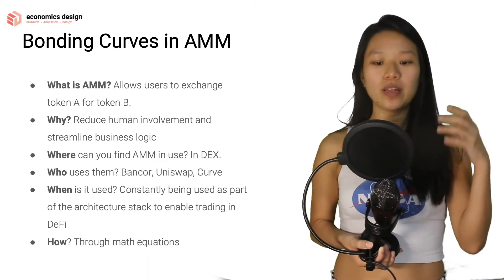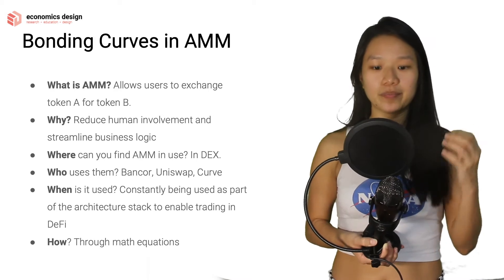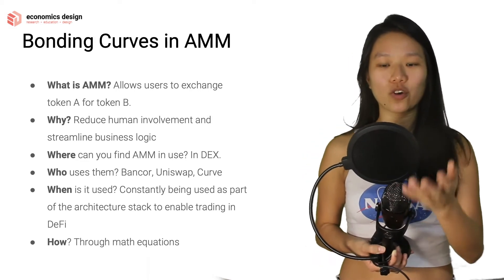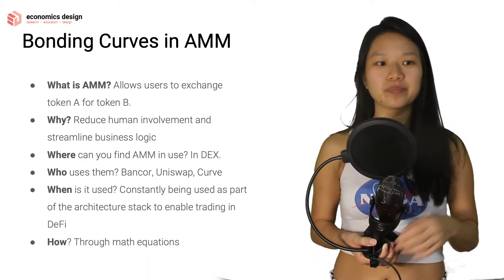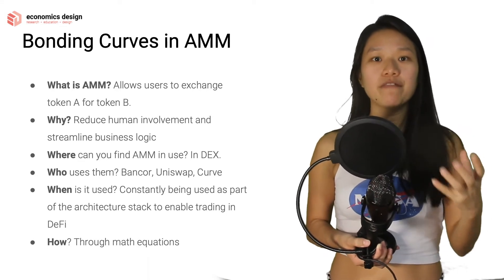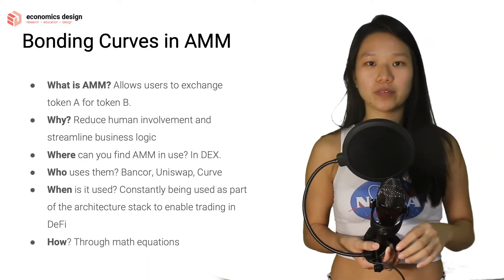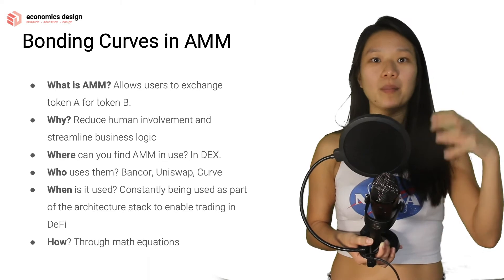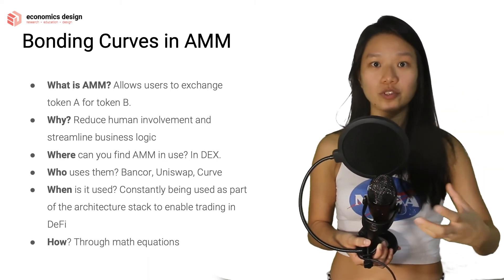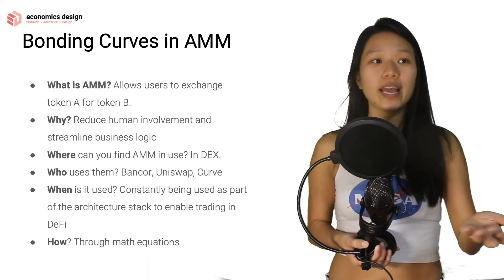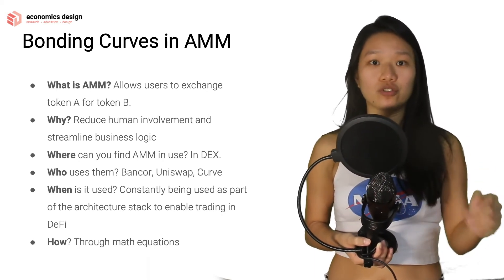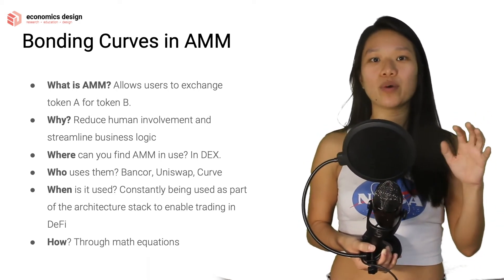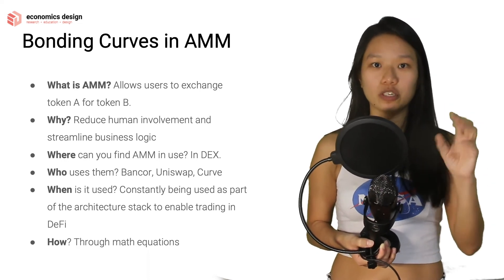Who uses them? As I mentioned: Bancor, Uniswap, Curve, Balancer — these are different projects that use them. A lot more are coming, and the fun thing about decentralized exchanges is that they really thrive with network effects — not just in the sense that a lot of people are trading, but network effects in terms of the depth of liquidity being provided. The amount of liquid tokens in the system matters so that people can trade. If you only have 1,000 tokens and someone wants to trade 5,000, you just don't have enough liquidity to support that trade.